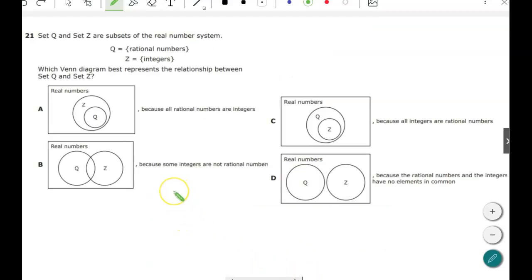All right, we're gonna do one more on this recording. So we have set Q and Z are subsets of the real number system. Which Venn diagram best represents the relationship between the two sets? Real numbers, remember, they're not irrational. So real numbers are the set of rational and irrational numbers. Okay, this says because all rational numbers are integers. Okay that could be true because this could be the integers and then this could be rationals. Okay this says, that's not true because all, oh this is backwards I'm sorry I read that wrong. All integers are rational numbers. So be careful. All right let's look at C. Because all integers are rational numbers, there it is.